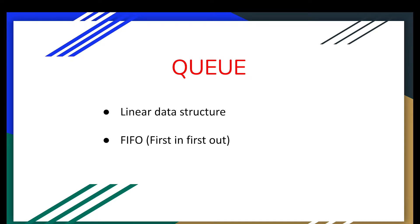Hi guys, in this video we will talk about Queue. Basically, Queue is a linear data structure which works on the principle of First In First Out - the element which comes in first goes out first. Now we will have a look at the operations of Queue.